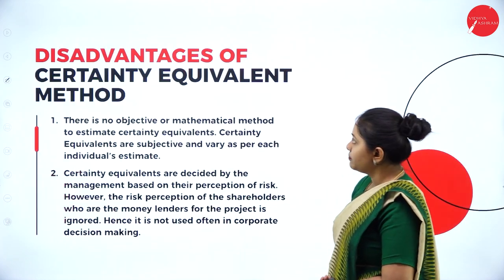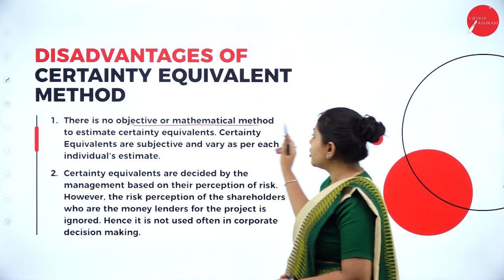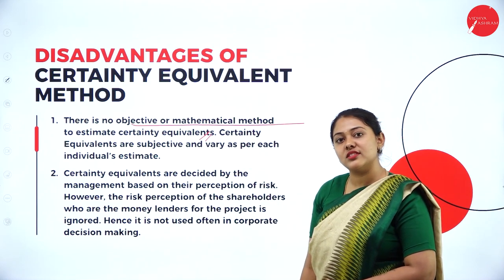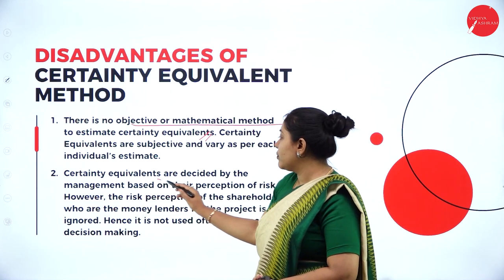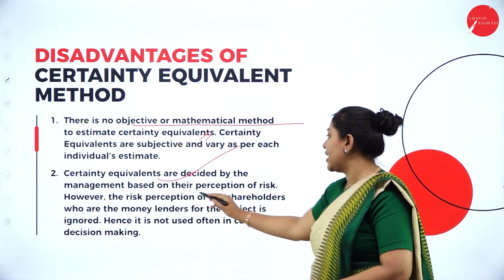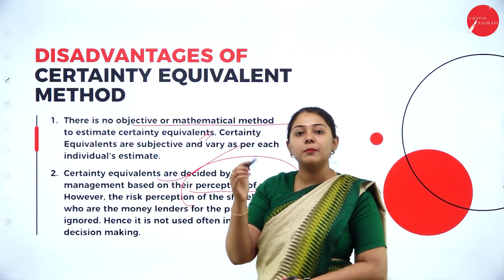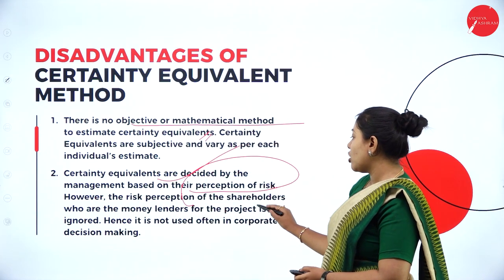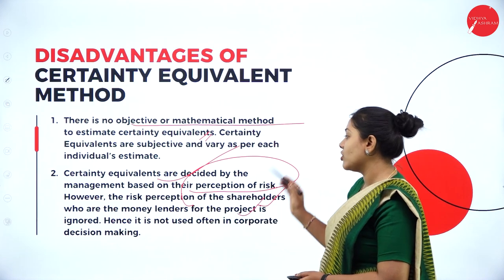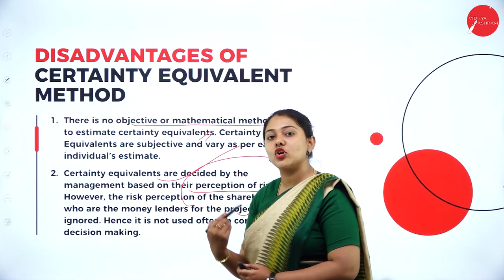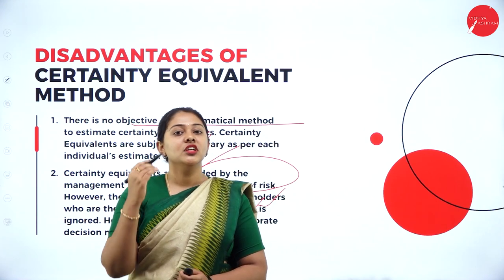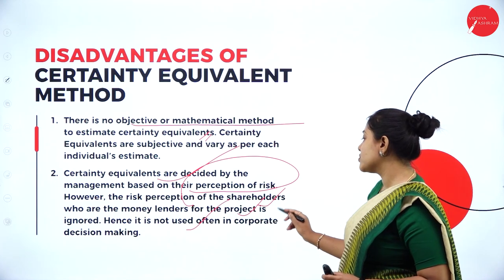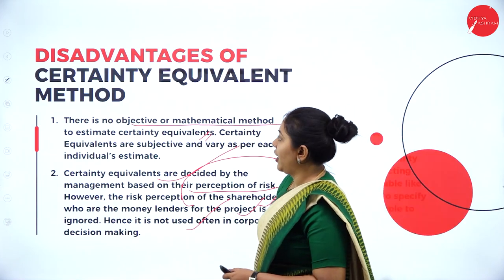Moving forward, there are certain disadvantages as well. There is no objective or mathematical method for calculating the certainty equivalent coefficient — we cannot judge what risk is taken by the company. Certainty equivalents are decided by management based on the perception of risk. Based on management's perception of risk, they take up the certainty coefficients. However, the risk perception of the shareholders, who are the money lenders for the project, is ignored. Based on management's risk perception alone, the risk coefficient values are taken. Hence, it is not used often in corporate decision making.